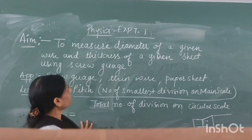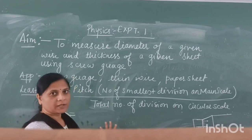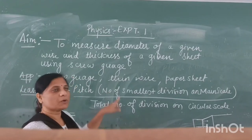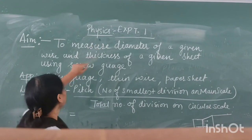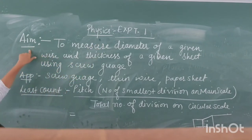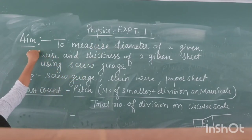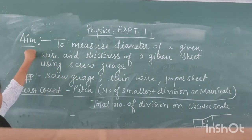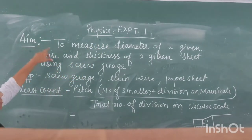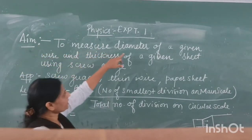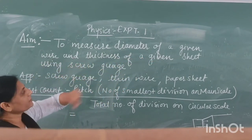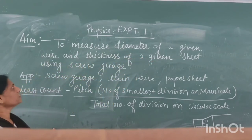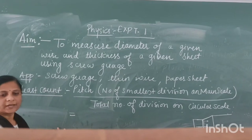Good morning children. Today we are performing experiment number 1 of our subject physics. The aim of the experiment is to measure the diameter of a given wire and thickness of a given sheet using a screw gauge.